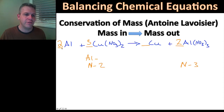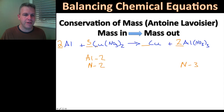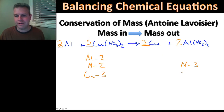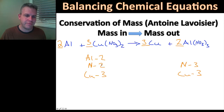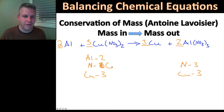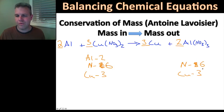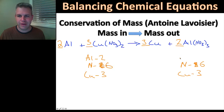With a two in front of aluminum on the left, my aluminums are balanced — two on each side. For copper: I have three coppers on the right because of that coefficient of three, so I put a three on the copper side on the left — coppers balanced. For nitrogen: three times two gives six nitrogens on the left, and two times three gives six nitrogens on the right — balanced. So far so good.